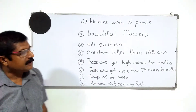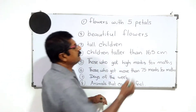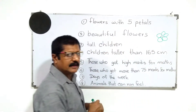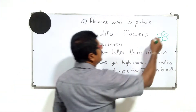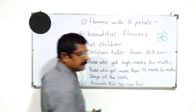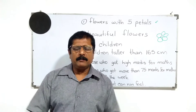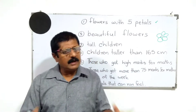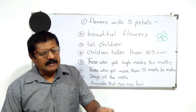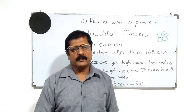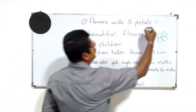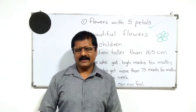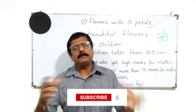Look at this first example: flowers with five petals. You can take a flower in your hand and count the number of petals. If it has five petals, yes, that flower is a member of this group. Whoever selects — whether it's you, your friend, or any other person — will select the same thing. Therefore, it is the same.